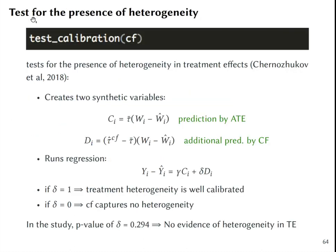Finally, you can test for the presence of heterogeneity. Test calibration is a test for heterogeneity in treatment effects based yet on another paper by Chernozhukov and co-authors. It creates two synthetic variables, Ci and Di. Ci is the prediction by using only average treatment effect. Di is the additional prediction that takes into account the heterogeneity in treatment effects as predicted by the causal forest.